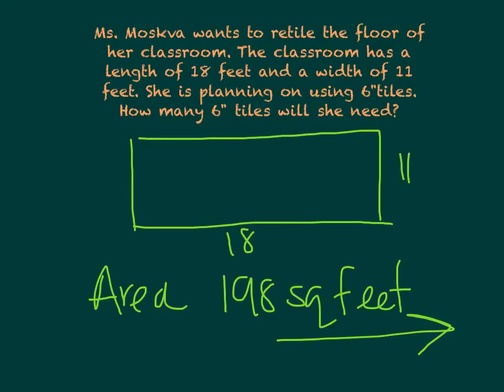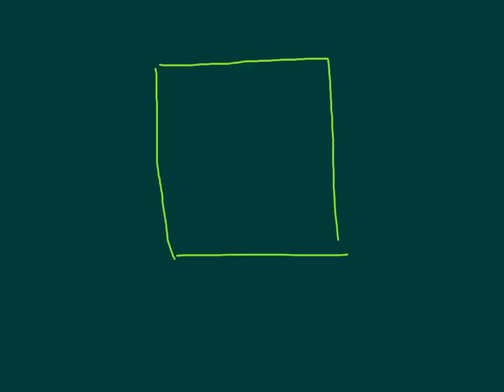A quick correction: I said the classroom was 11 by 18 inches, but that clearly is not the case — the classroom is 11 by 18 square feet. Now, let's pretend that this is a 1-square-foot tile. It's 12 inches on each side, and that's what makes it 1 square foot.